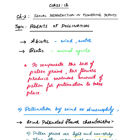There are mainly two types of agents of pollination: abiotic and biotic. The abiotic type includes wind and water, while the biotic type includes animal agents. Abiotic means all non-living things, and biotic — the name itself indicates 'bio' — means living organisms. It may be insects, birds, or some large animals.